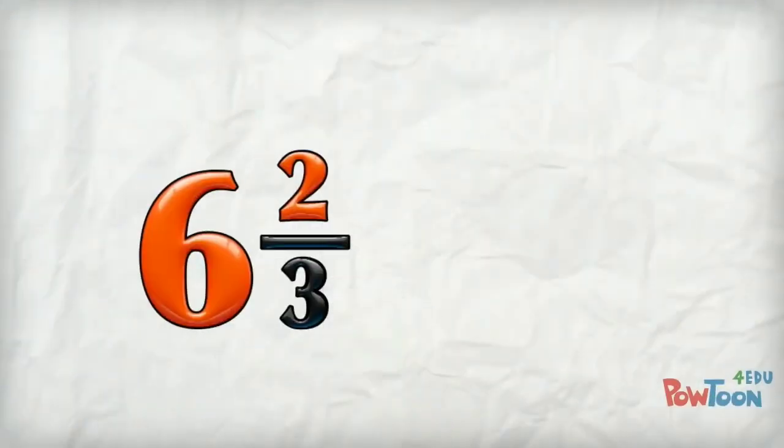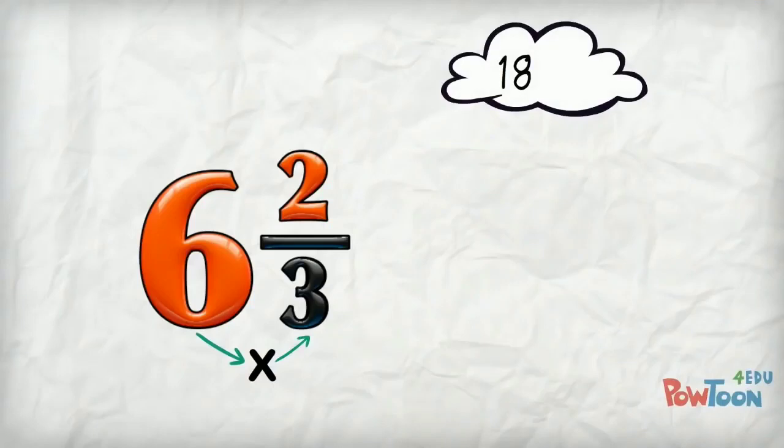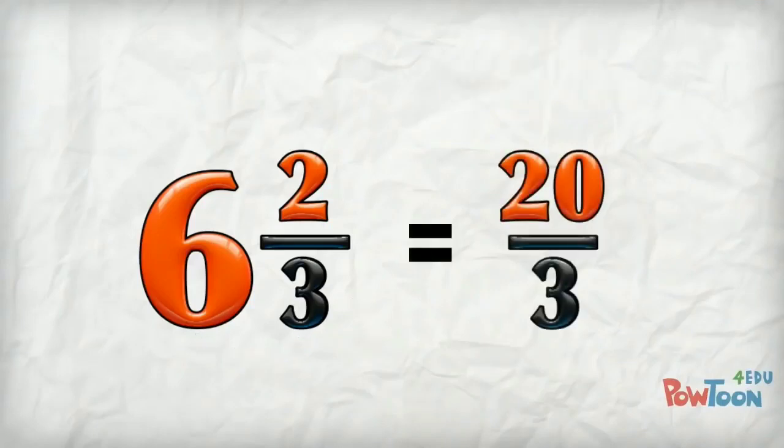Six and two thirds. Six holes, each hole is worth three parts. So six times three is 18, add the remaining two. That's 20 parts. Put that back over the denominator of three. Done!